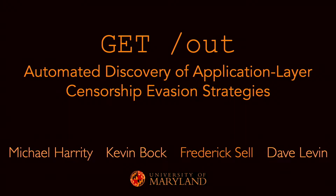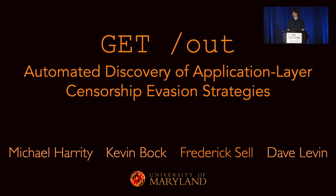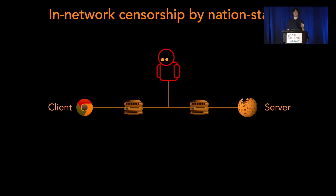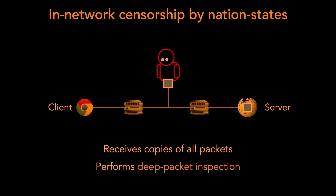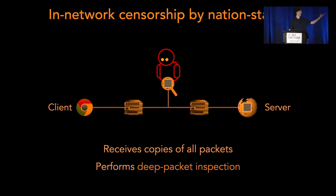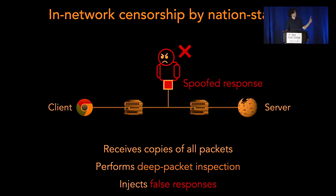Censorship is a pernicious threat against free and open communication online. This work specifically focuses on in-network censorship. We have a client and a server, and the censor is a middlebox somewhere between the two. The client sends out a request to contact a forbidden resource — in this case, Wikipedia — and the censor sees that this instance of Chrome is trying to contact Wikipedia and blocks the connection.